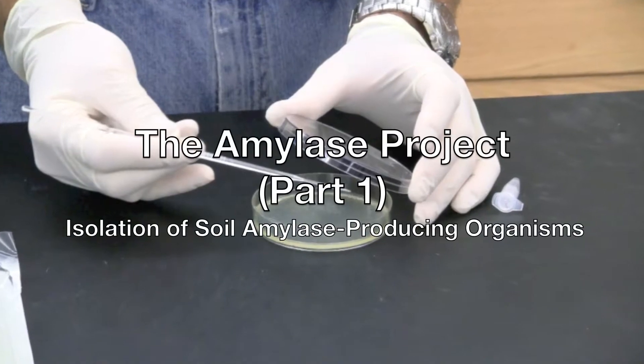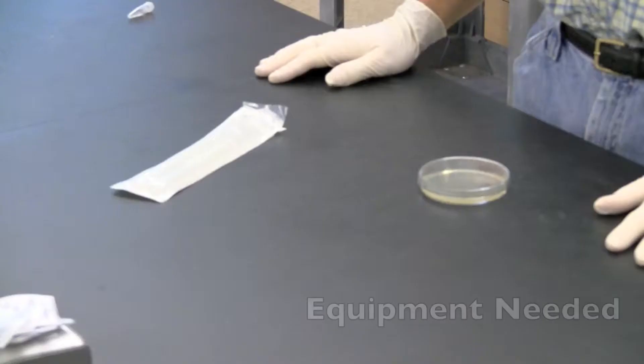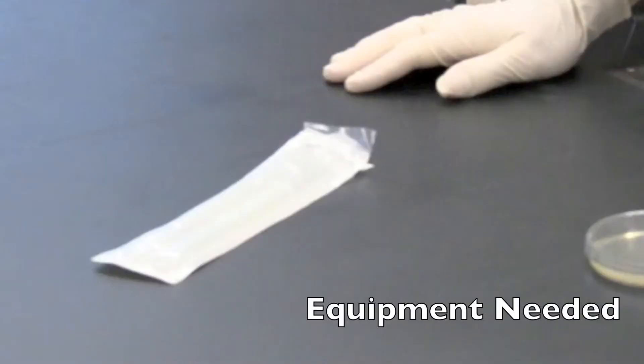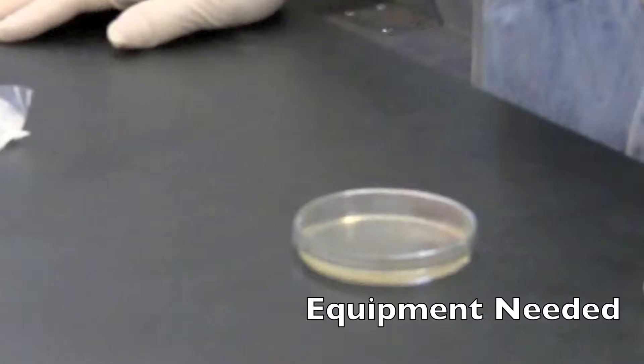The Amylase Project Part 1. You will need an inoculation loop, vial, and petri dish.